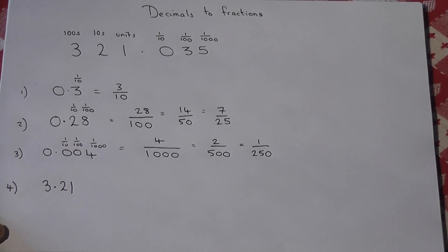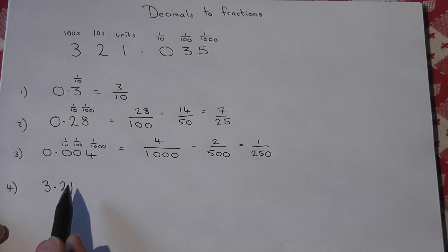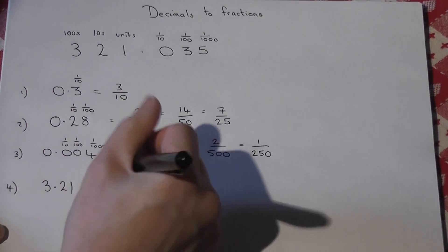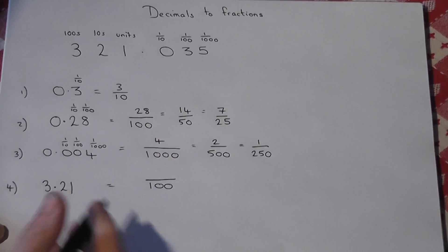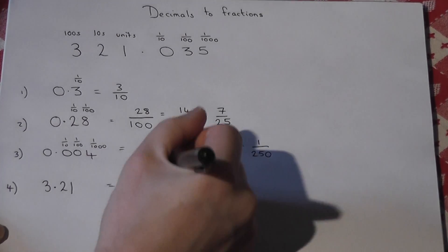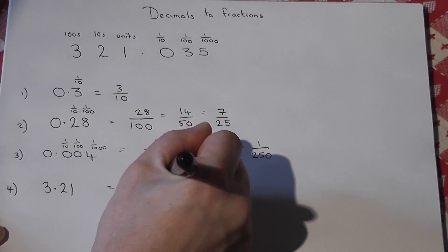So the final one, we've got units, tenths, and hundredths, so it's over a hundred. It's then just three hundred and twenty-one, so three hundred and twenty-one.